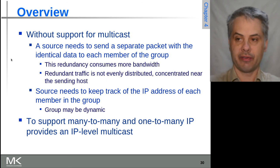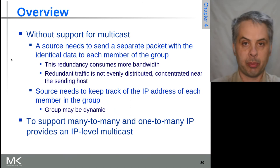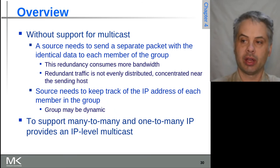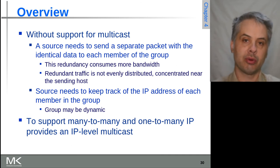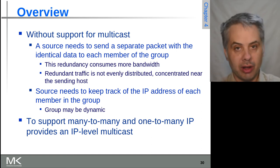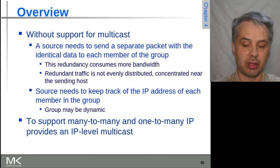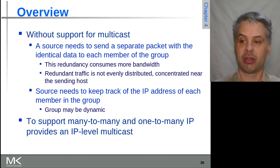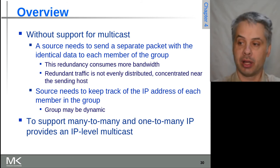Without multicast, every source needs to send separate packets to every destination. This is clearly suboptimal — there is a big congestion point at every source, because they need n times the traffic and n times the bandwidth to talk to n devices. Multicast lets you send one packet instead of n. This is the secret sauce of multicast.